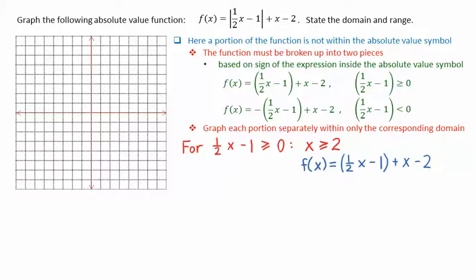We then have f of x equals 1 half x minus 1 plus x minus 2. We can simplify this function. 1 half x plus x gives 3 over 2x, and negative 1 minus 2 gives negative 3.